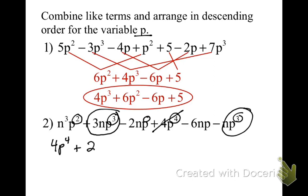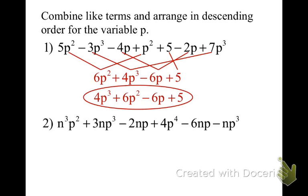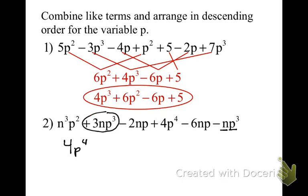That makes plus 2np to the 3rd. Notice that we're writing 4p to the 4th first. Now for it to be a like term, the variables must be the same — n to the 1st, p to the 3rd here, and n to the 1st, p to the 3rd here. Since they match, these are like terms. So 3n to the 1st p to the 3rd minus 1n to the 1st p to the 3rd makes positive 2n to the 1st p to the 3rd.